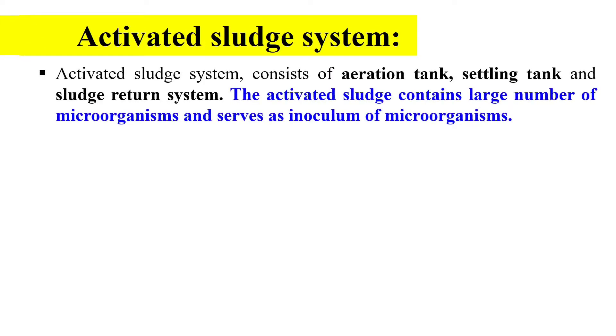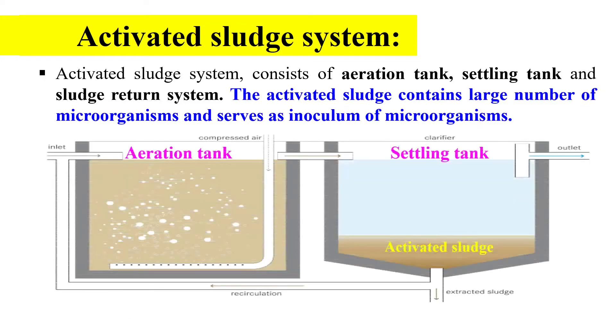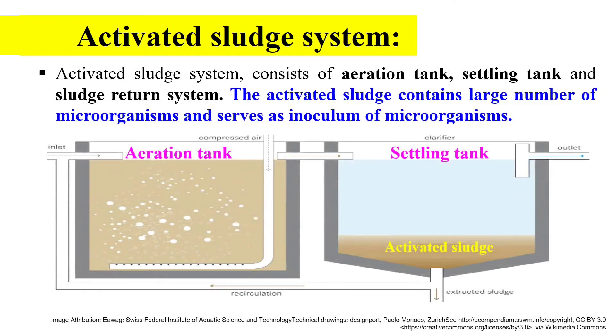This is the activated sludge system. In this case, the activated sludge system consists of an aeration tank, a settling tank, and the sludge return system.